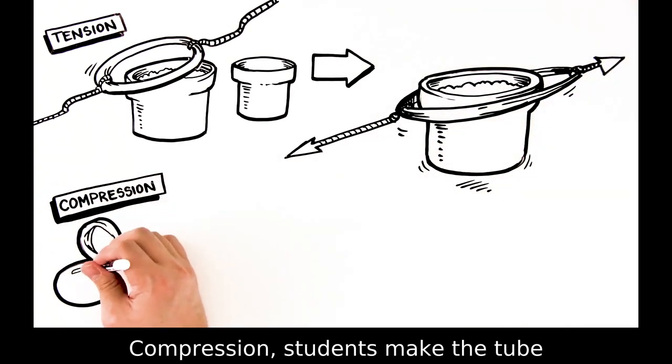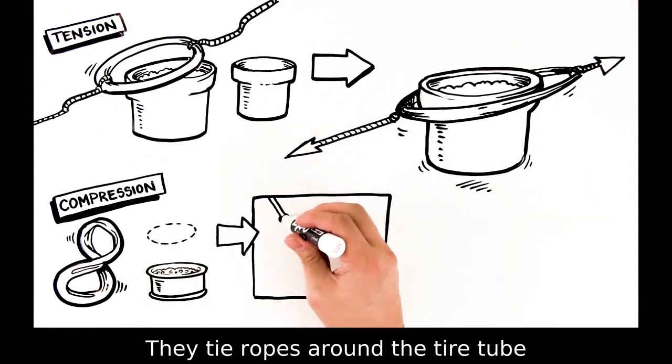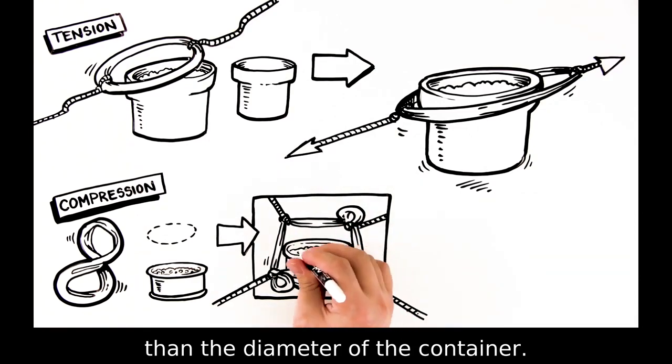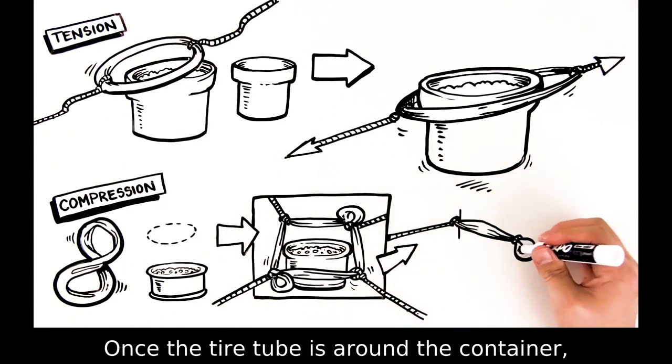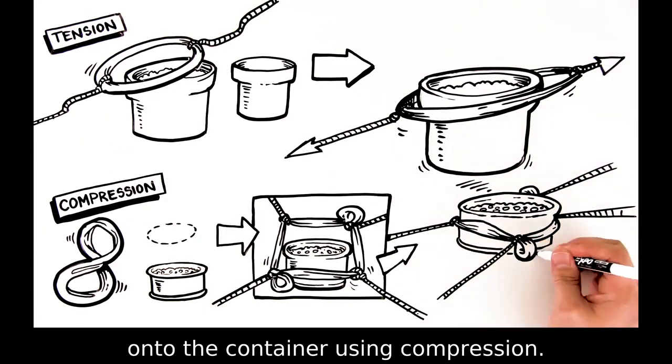For compression, students make the tube smaller than the diameter of the container. They tie ropes around the tire tube and pull so that the tire tube is larger than the diameter of the container. Once the tire tube is around the container, they can let go, and the tire tube will snap onto the container using compression.